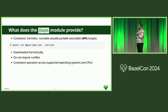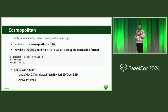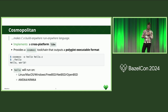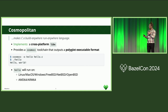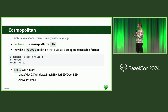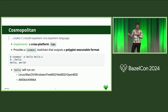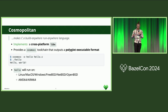I will dig into how an APE binary actually works. It is built out of the project called Cosmopolitan. Cosmopolitan's goal is to make C into a build-anywhere, run-anywhere language. It provides a Cosmo CC toolchain that builds C into a fat, polyglot, executable format — so Hello World runs across all these operating systems, AMD64 and ARM64, all from one binary.